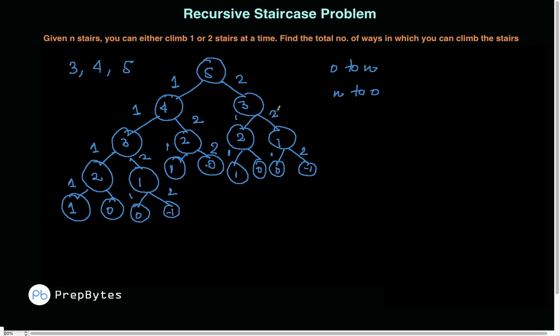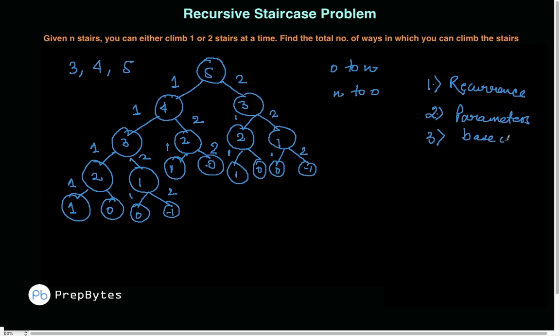Now that we've built this tree, let's answer three questions recursion always raises: the recurrence relation, the parameters to pass, and the base conditions. The recursion tree has the answer to all of these. Trust me — let's start with the base conditions.